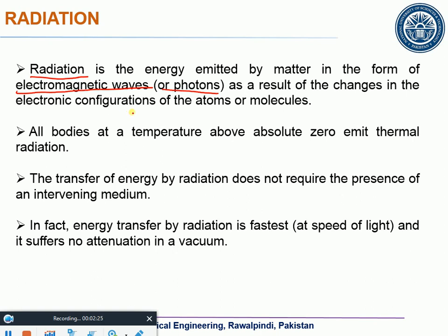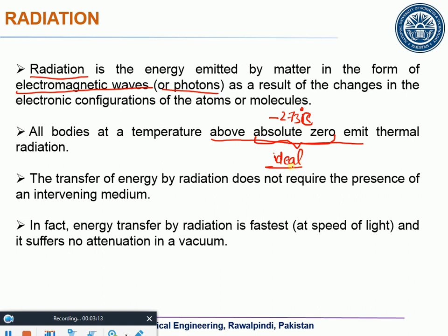All kinds of bodies emit radiation — whether it is a gas, a liquid, or a solid object. Technically, any body having a surface temperature above absolute zero emits thermal radiation. Absolute zero is minus 273 degrees centigrade. This is an ideal condition that scientists have not been able to achieve; they are trying to get closer and closer, but it remains unachievable.